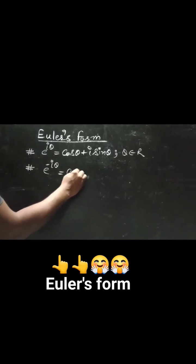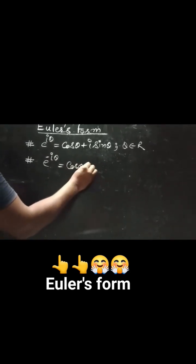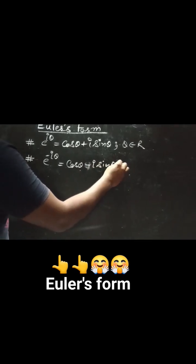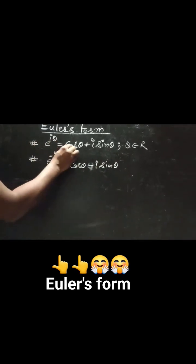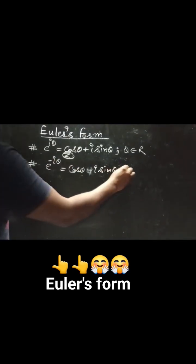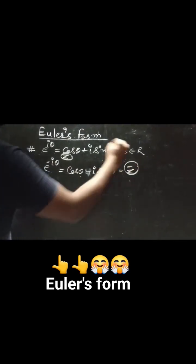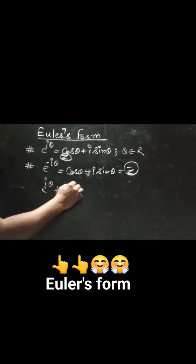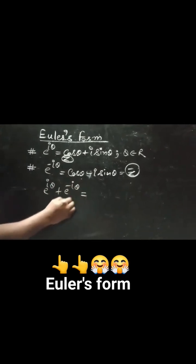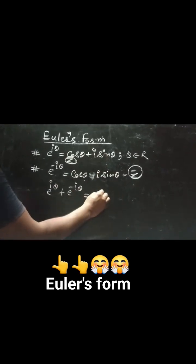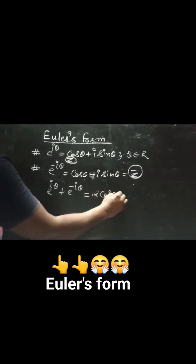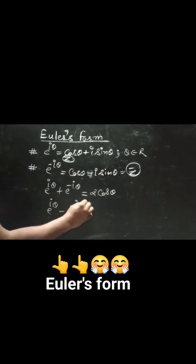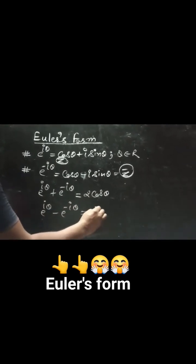If e^(iθ) is z, then e^(−iθ) is the conjugate of z. Adding them: e^(iθ) + e^(−iθ) — here the i sin θ terms cancel out — you get 2cos θ, which is purely real. Similarly, e^(iθ) − e^(−iθ): if you subtract them...